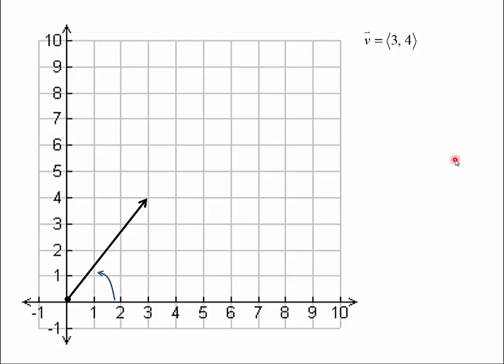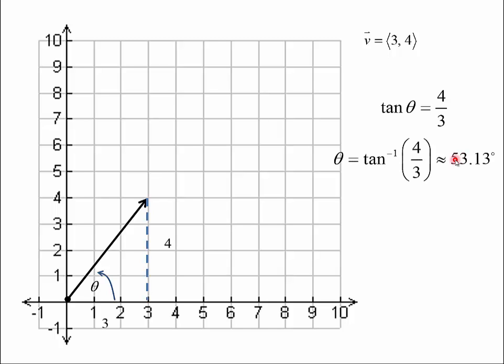We also want to be able to find the direction angle — this angle theta. Notice that the 4 here, the y component, is the side opposite theta. And the x component, the 3, is the length of the adjacent side. Tangent is opposite over adjacent, so that's 4 over 3. Tangent theta equals 4 thirds, which means theta equals the inverse tangent of 4 thirds, which is approximately 53.13 degrees.